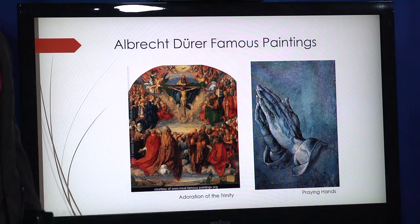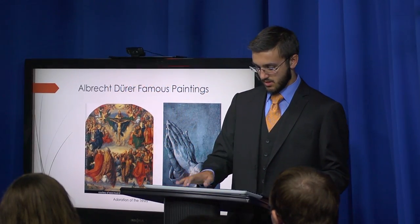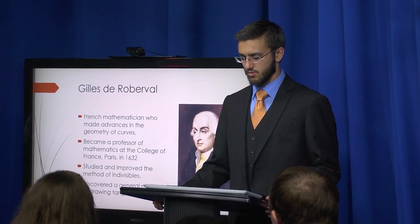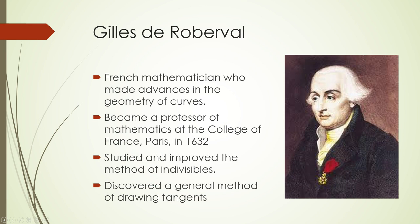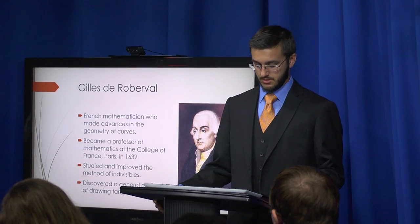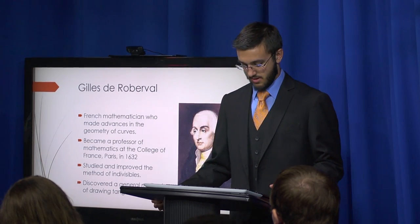Here are two of his most known paintings. On the right is the Praying Hands, and on the left is the Adoration of the Trinity. The last mathematician we'll talk about is Gilles de Roberval, a French mathematician who made advances in the geometry of curves. He became a professor of mathematics at the Collège de France in Paris in 1632, and he studied and improved methods for indivisibles. He also discovered the general method of drawing tangents.